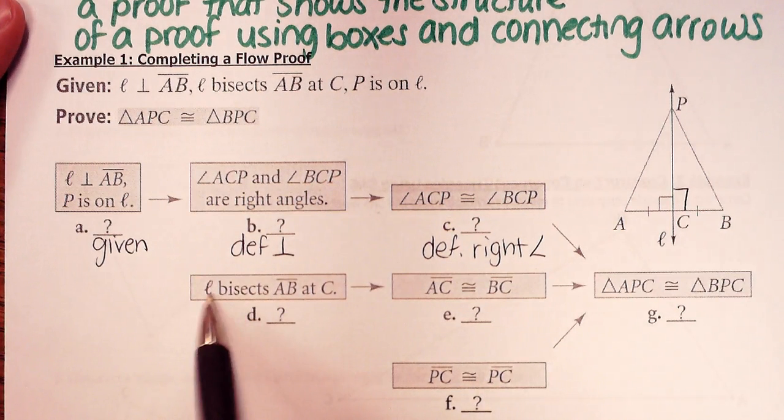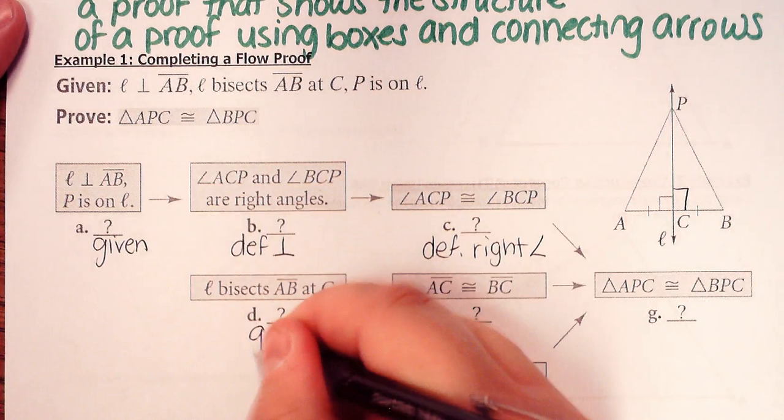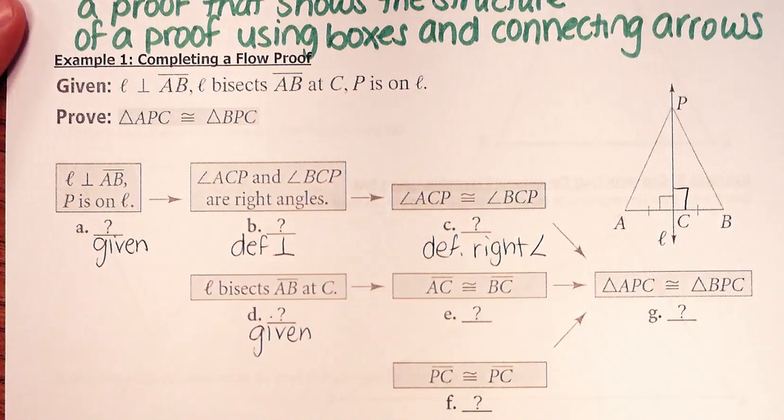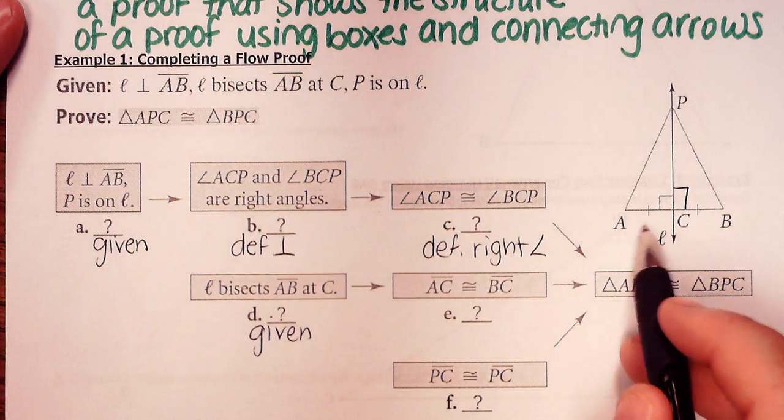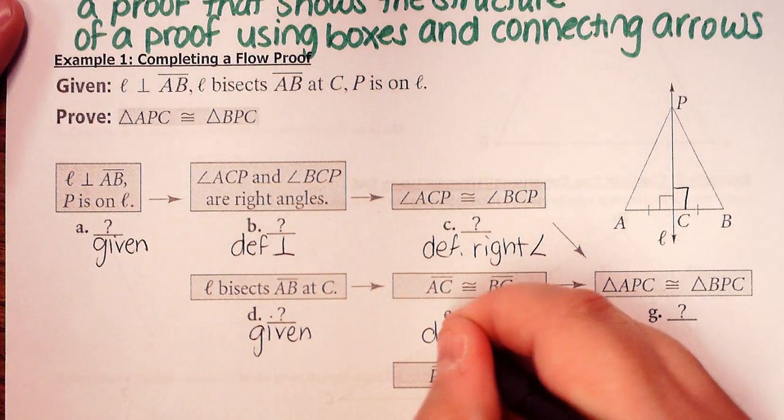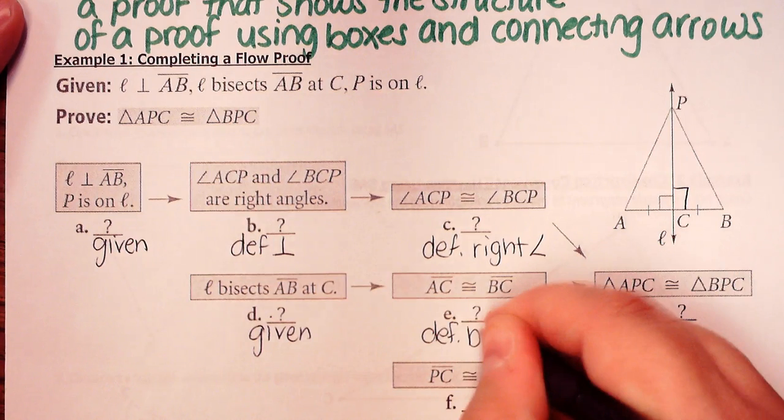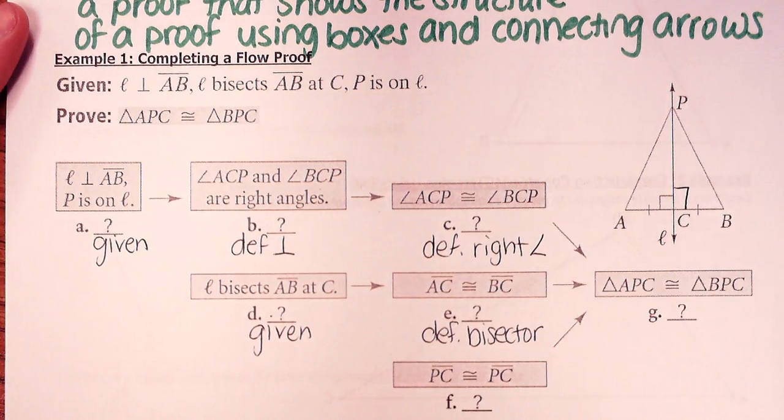Okay, again, L bisects AB at C. If you guys look back up here, again, that was part of the given information that's just being restated. The triangle parts you get because of that are right here. AC, this segment, and BC are congruent. So I would say definition of a bisector there. Because you're bisecting that segment, that means it cuts it into two equal pieces.